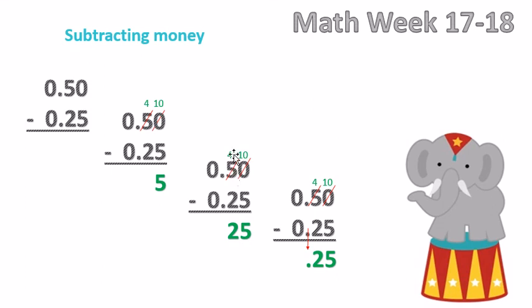So now our 5 is now a 4. So 4 minus 2 equals 2. So then the only thing that's left to do, because we know 0 minus 0 equals 0,